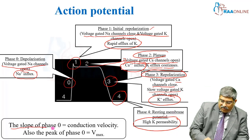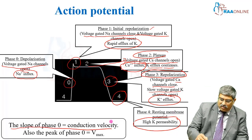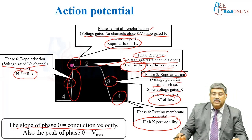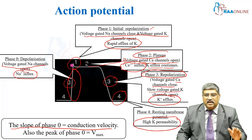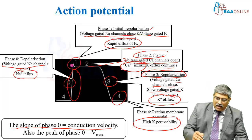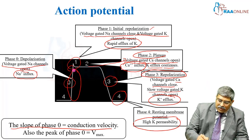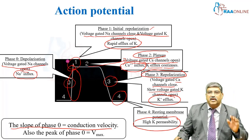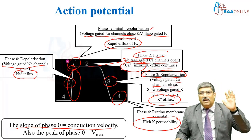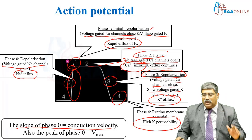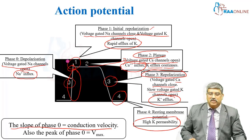The slope of phase 0 represents the conduction velocity, and the peak of phase 0 is the maximal velocity.